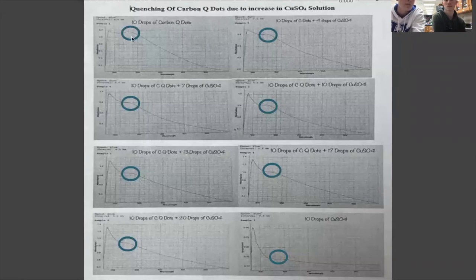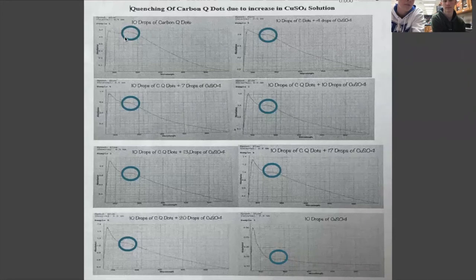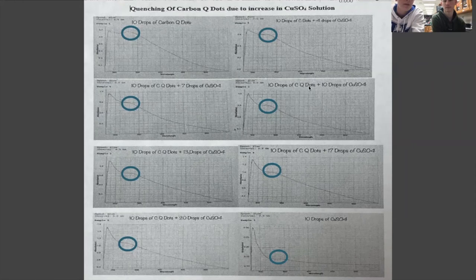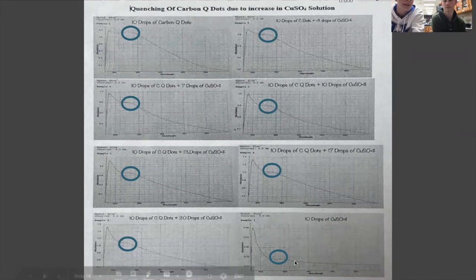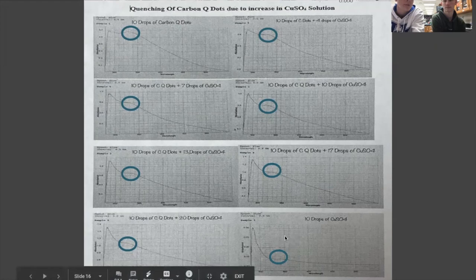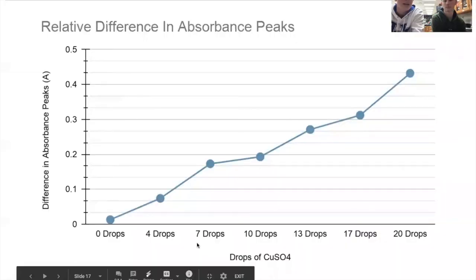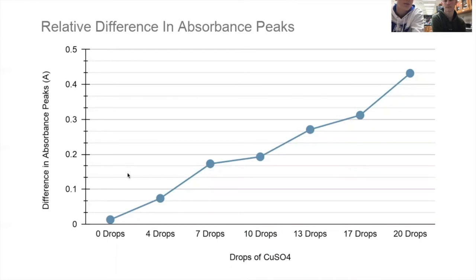You can see with 10 drops of just carbon dots in the top left, the peak is relatively high. As you go down here to this one with 10 drops of carbon dots and 10 drops of copper sulfate, that peak lowers with the more concentration of copper sulfate, until at the end here we have just 10 drops of copper sulfate and you can see that there's no peak at all. With more copper sulfate, the more distance between the peaks, therefore the quenching is occurring. You can see that on this graph from zero drops to 20 drops, the difference in the peak keeps on getting larger and larger.